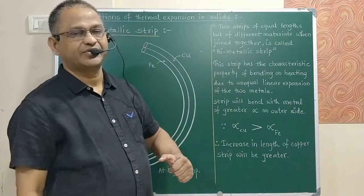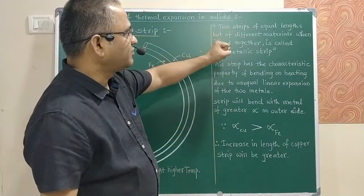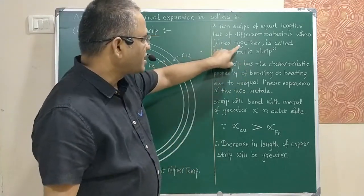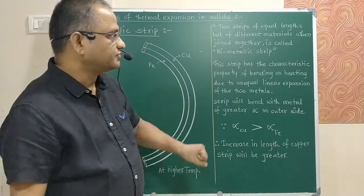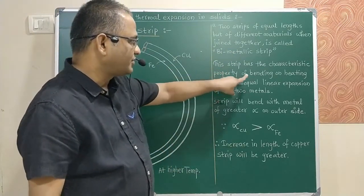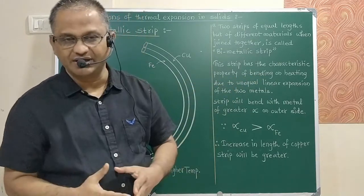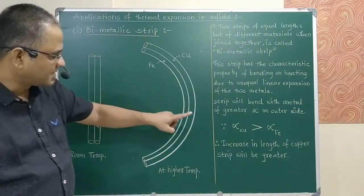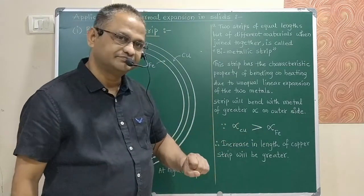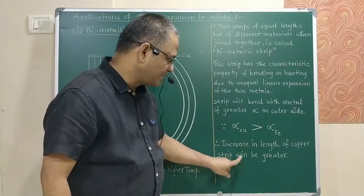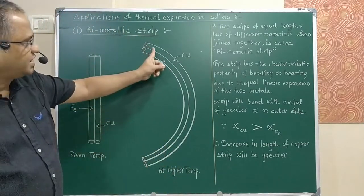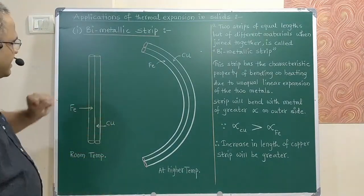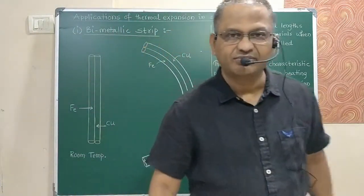So the definition of a bimetallic strip is: two strips of equal length but of different metals, when joined together, form a bimetallic strip. Its property is that it bends on heating due to unequal linear expansion. Since alpha of copper is greater than alpha of iron, copper will be on the convex side and iron on the concave side. The working of a bimetallic strip is an example of thermal expansion of solids.